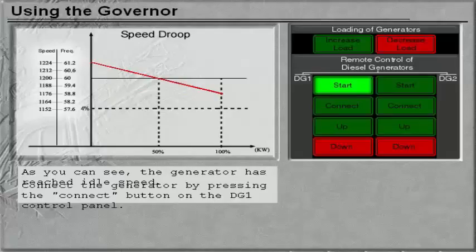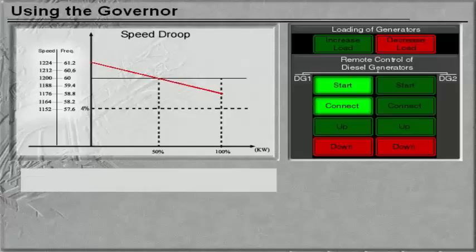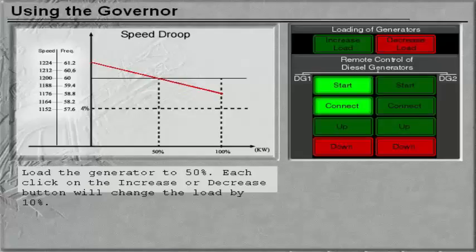Connect the generator by pressing the Connect button on the DG1 control panel. Load the generator to 50%. Each click on the Increase or Decrease button will change the load by 10%.